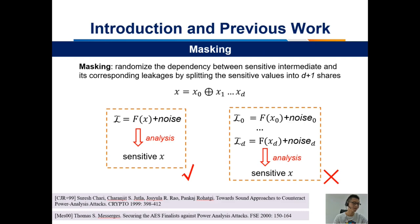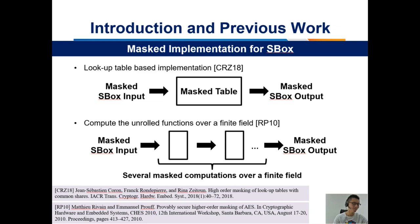Among all common measures against side-channel attacks, masking is one of the most widely used for its great performance. Specifically, masking reduces the dependency between the sensitive intermediate and its corresponding leakage by splitting the sensitive value into D+1 shares. When protecting the cryptographic algorithm using masking, the linear operations are simple to mask, because for a linear function it is sufficient to compute for each share separately. But the nonlinear operations are difficult to mask.